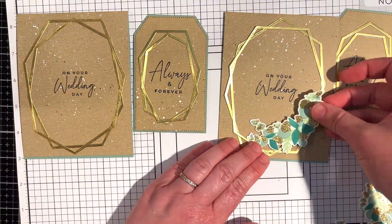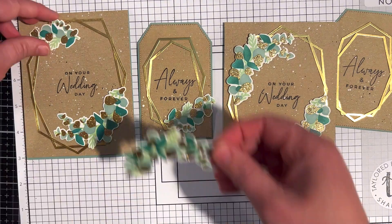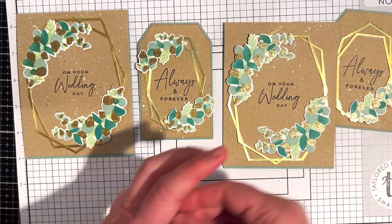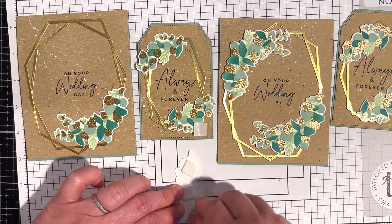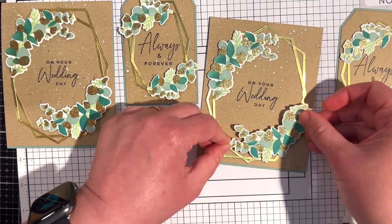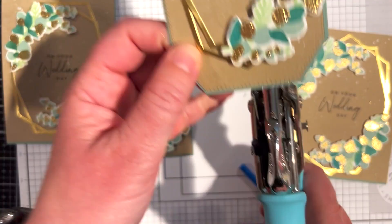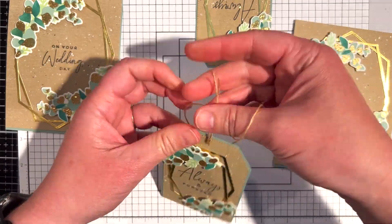The last thing I need to do to finish off this set of cards and tags is to add the eucalyptus. I played around with a few different arrangements and I landed on using the two larger pieces on the cards and then two smaller pieces on the tags. I added these with foam squares to pop them up just a bit. For the tags, I punched holes with a hole punch and threaded some burlap twine through to finish them off.